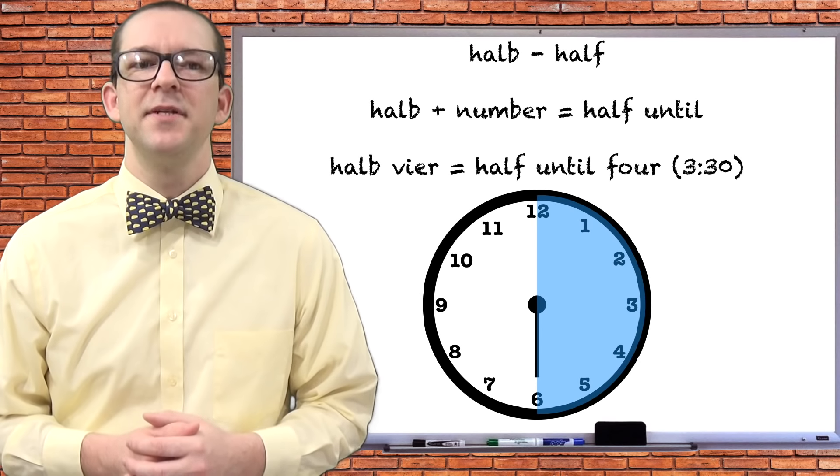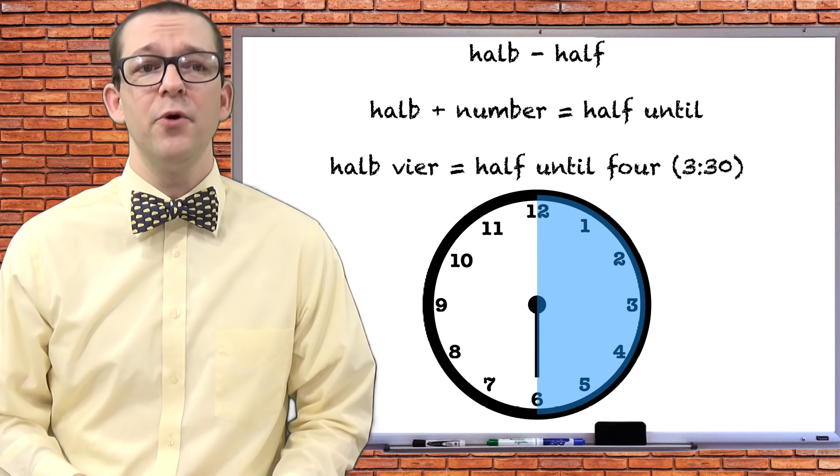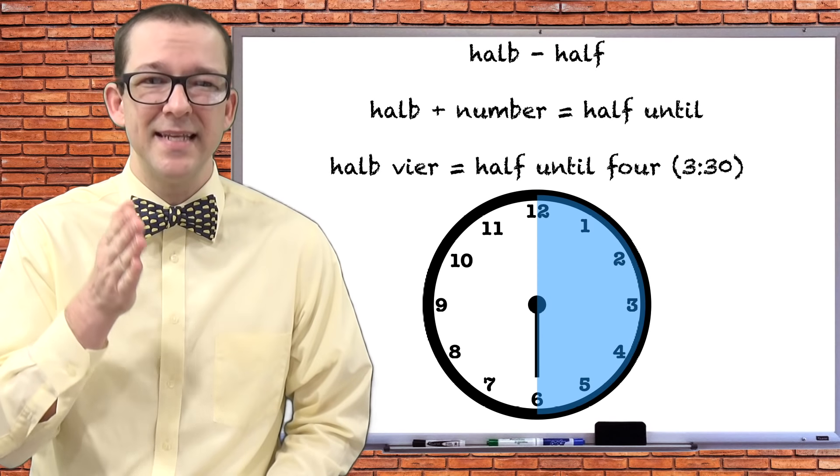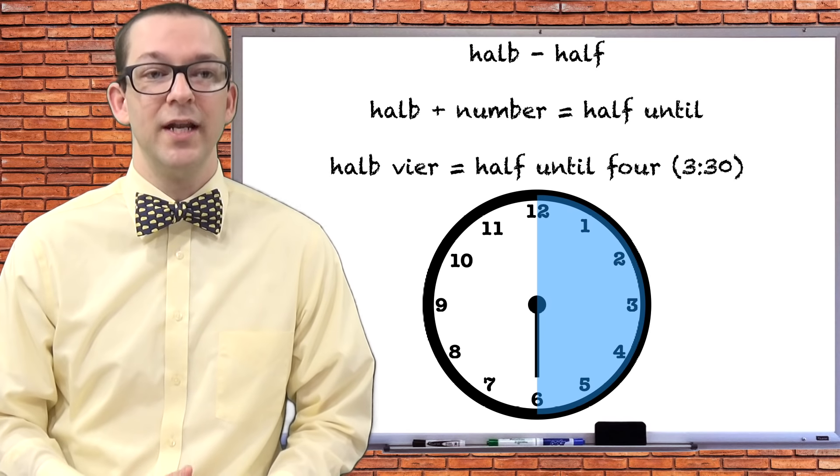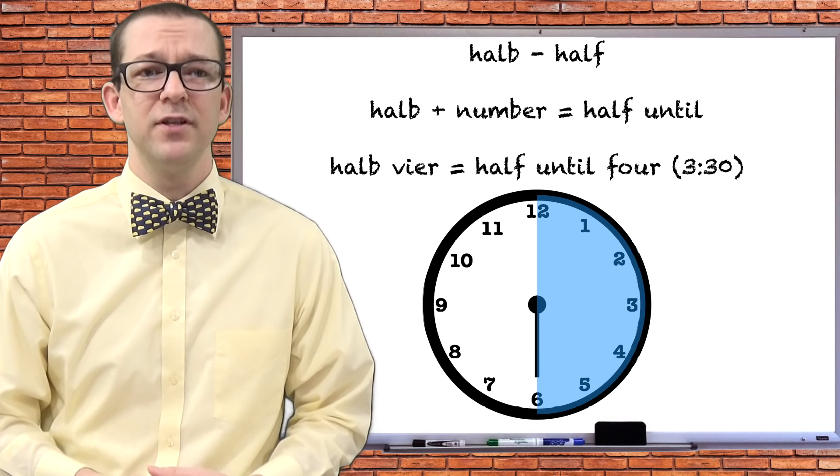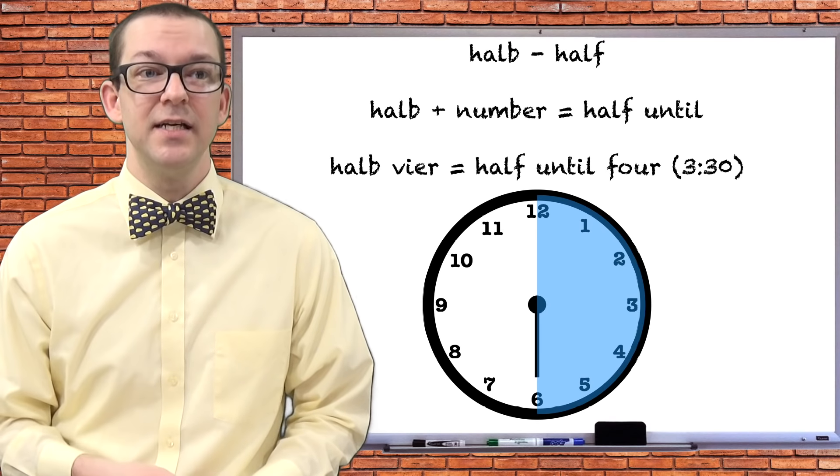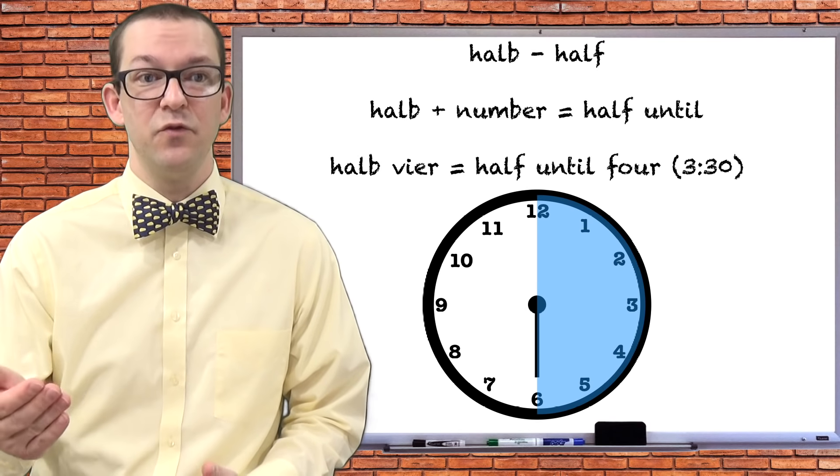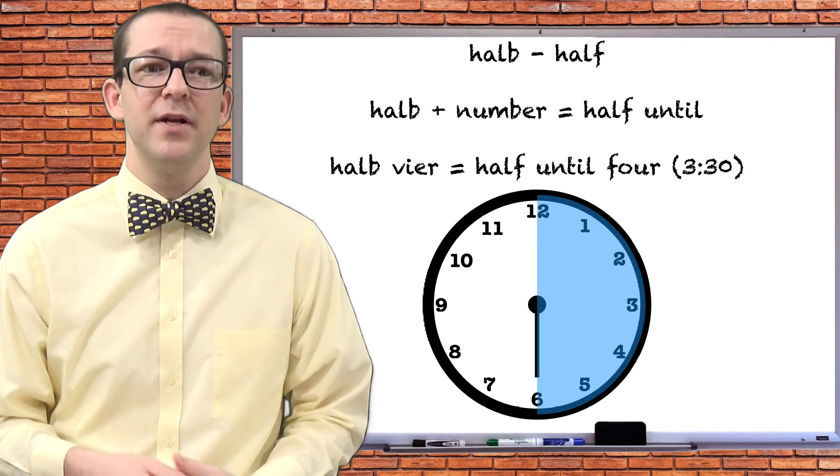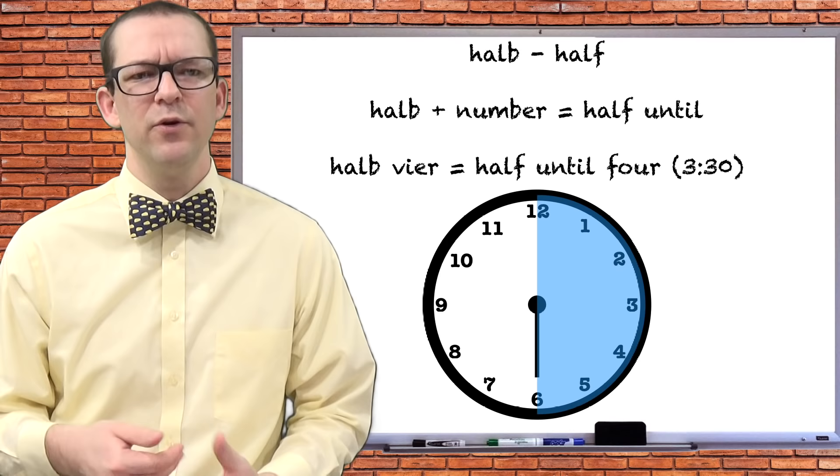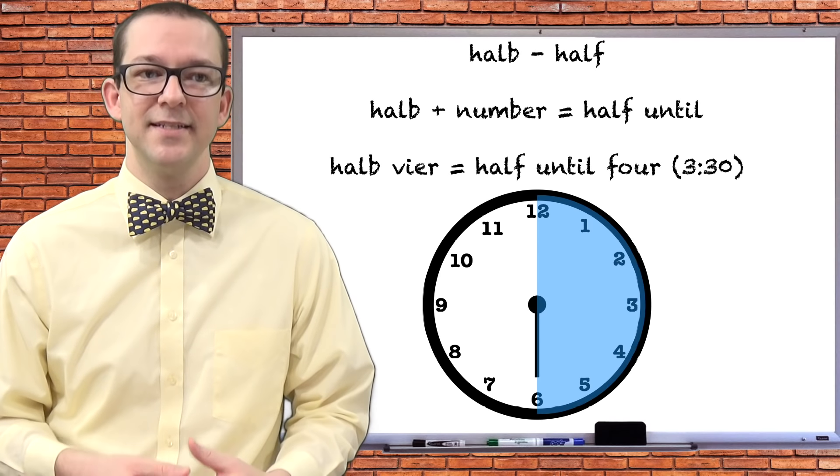Let's start with the time telling things that I left out of the last video. In German you don't always have to give the precise minutes and hours of the day. You can split the hours into quarters and halves like you do in English. Unlike in English, however, the German phrase halb vier doesn't translate as half past four, but instead half until four. This is a bit disorienting at first, but it's quite simple once you understand it.